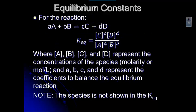For a generic reaction, some number of molecules of A plus some number of molecules of B (double half arrow) gives us some number of molecules of C plus some number of molecules of D.